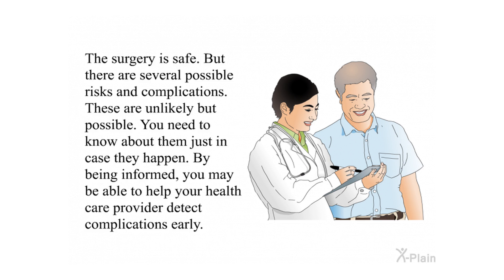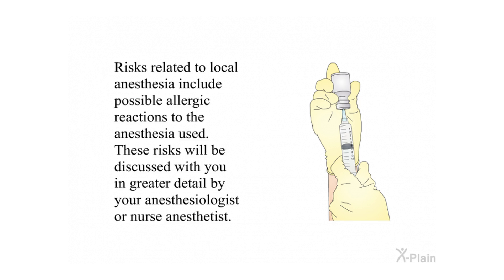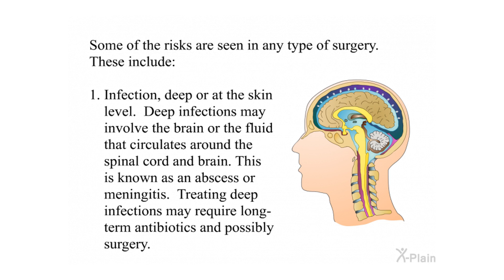Risks and complications. The surgery is safe, but there are several possible risks and complications. These are unlikely but possible, and by being informed you may be able to help your health care provider detect complications early. Risks related to local anesthesia include possible allergic reactions, which will be discussed in greater detail by your anesthesiologist or nurse anesthetist. General surgical risks include infection — deep or at the skin level. Deep infections may involve the brain or the fluid circulating around the spinal cord and brain, known as an abscess or meningitis, and may require long-term antibiotics and possibly surgery.